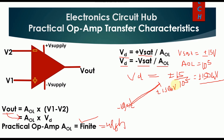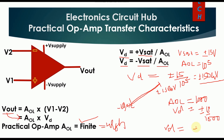Now let's say Aol equals 1000. In that case, Vd equals ±15 divided by 1000, and you will get Vd equals ±15 millivolts. So if your input lies between -15 millivolts and +15 millivolts, at that point of time you will have some finite output and that is linear.